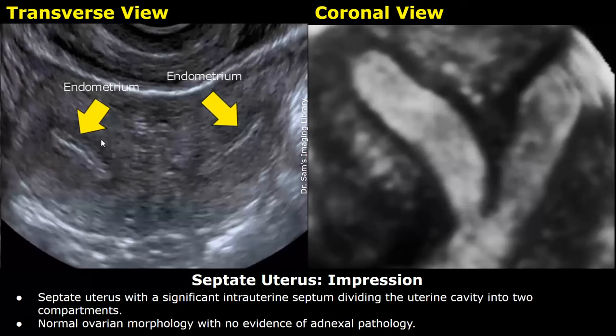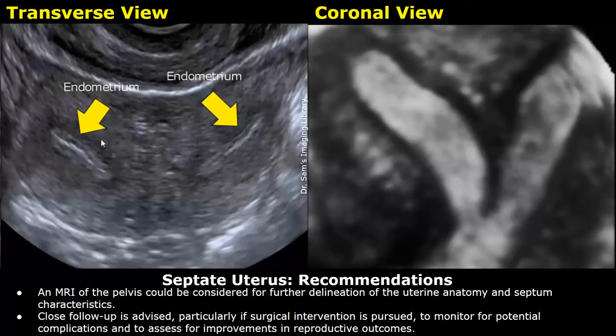This is the impression: septate uterus with a significant intrauterine septum dividing the uterine cavity into two compartments. Normal ovarian morphology with no evidence of adnexal pathology. Recommendations: an MRI of the pelvis could be considered for further delineation of the uterine anatomy and septum characteristics. Close follow-up is advised, particularly if surgical intervention is pursued, to monitor for potential complications and to assess for improvements in reproductive outcomes.